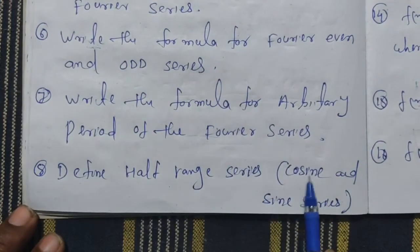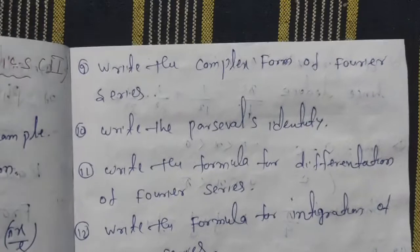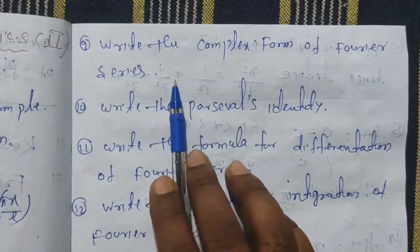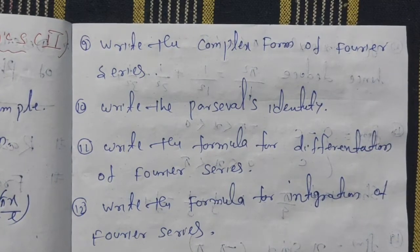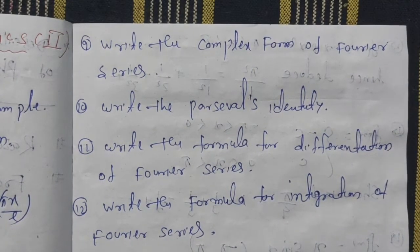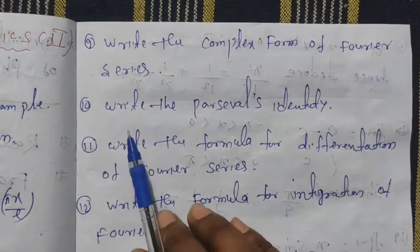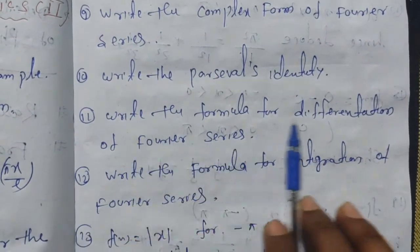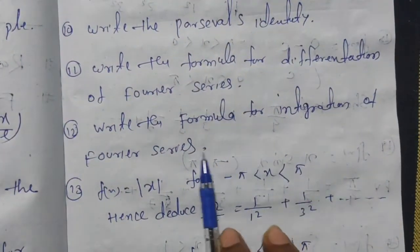Define Half Range Series — Cosine Series and Sine Series. Write the Complex Form of Fourier Series. Write Parseval's Identity. Write the Formula for Differentiation of Fourier Series. Write the Formula for Integration of Fourier Series. These are the definition-type short questions.